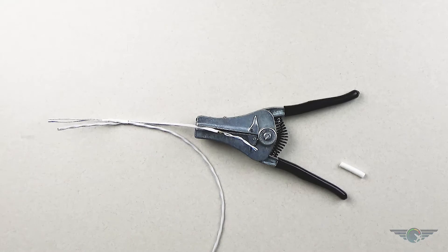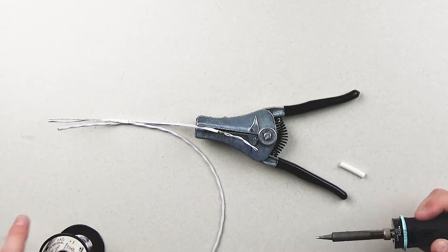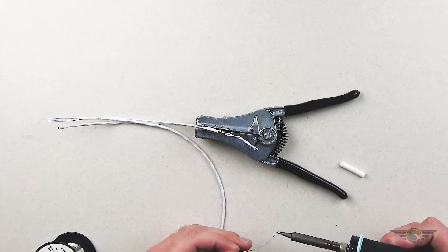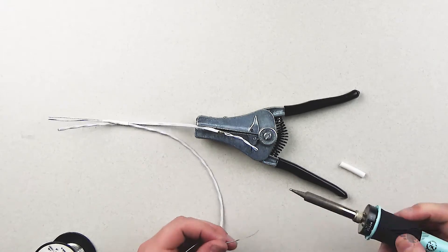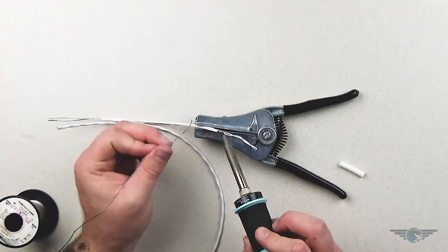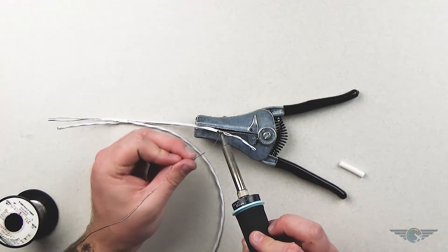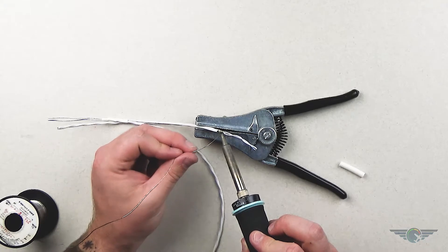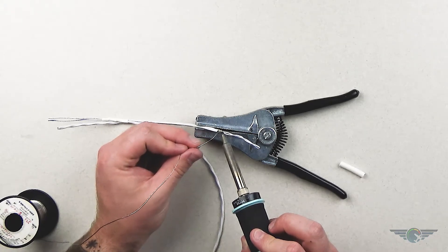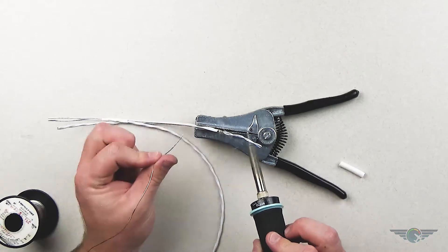And again, add my solder ball here. And then I'm going to start. So it takes a second. There we go. Starting to melt. Now we've got good flow.